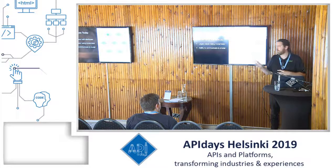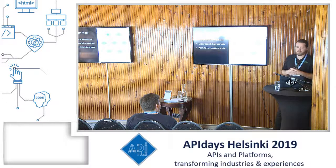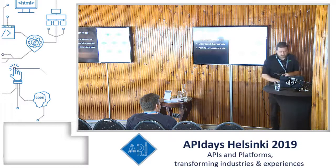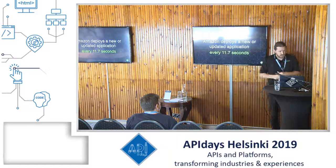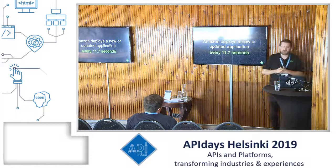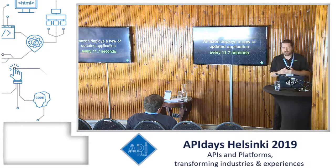Within all of this, the ability to communicate between services is becoming the number one priority — that's why you see a lot of interest right now with service mesh. In regards to agility, according to Amazon, they've increased their velocity of deployments to an average of 11.7 seconds between updates. That's pretty amazing.